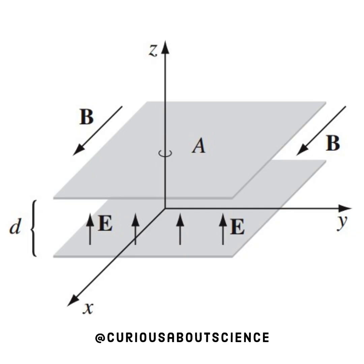Let's look at this diagram. As you see, parallel plate capacitor with separation distance d, E pointing in the z direction as stated, and B going in the x direction. The capacitor has an area A. Pretty well labeled.